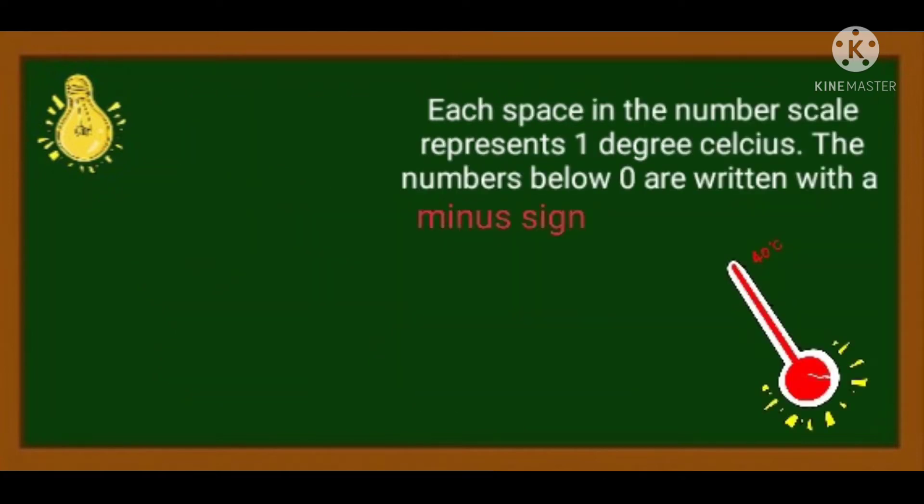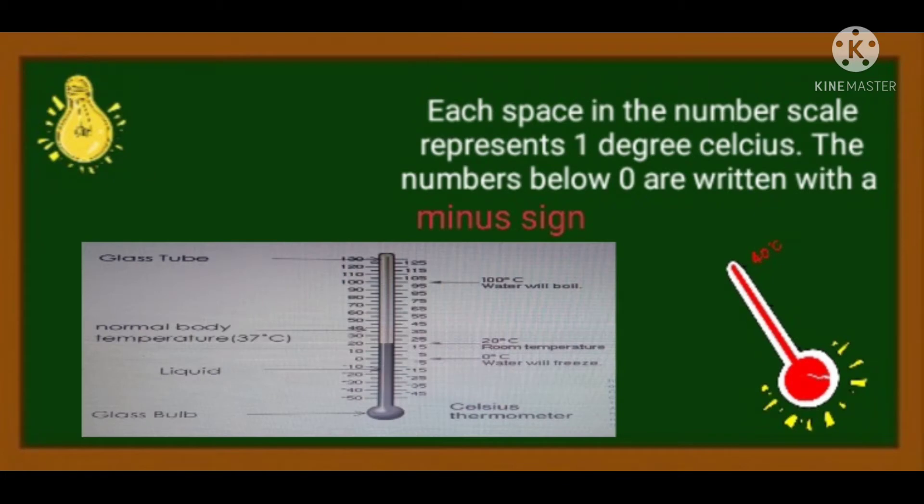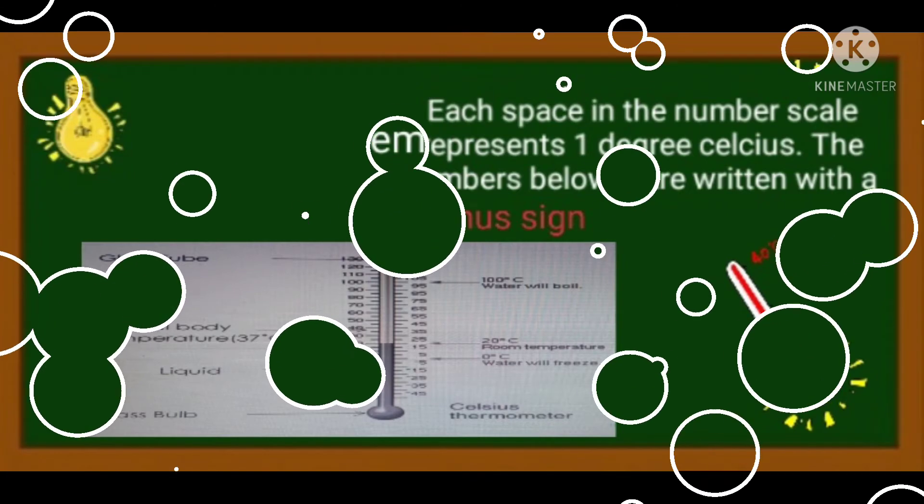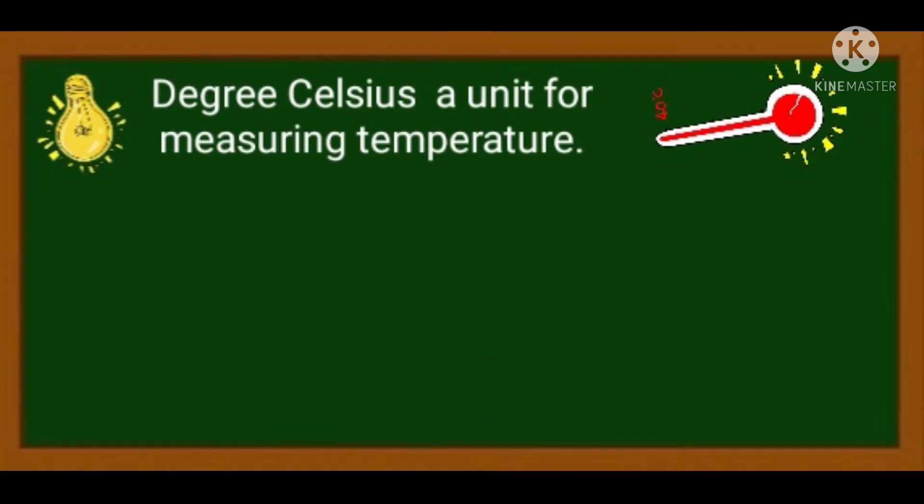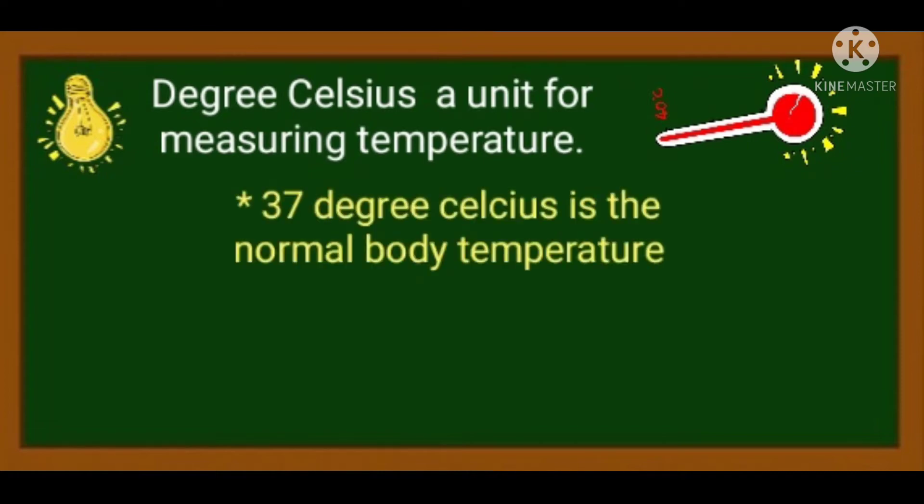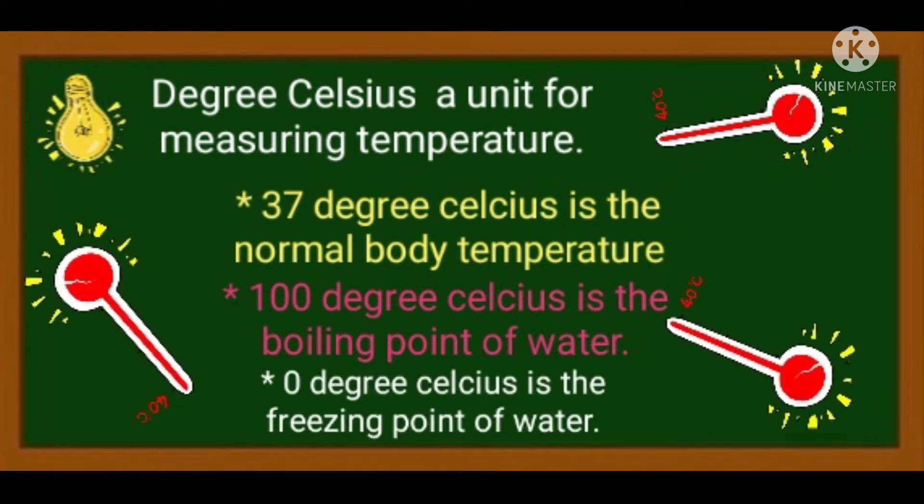The two common liquids inside the scale that goes up and down are the alcohol and mercury. Each space in the number scale represents 1 degree celsius. The numbers below 0 are written with a minus sign. So, negative na po yun doon pag may minus sign kasi sobra na po ang lamig noon. Degrees celsius a unit for measuring temperature. Our normal body temperature is 37 degrees celsius. The boiling point of water is 100 degrees celsius while the freezing point of water is 0 degrees celsius.